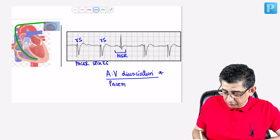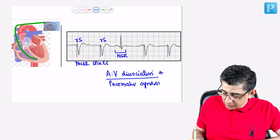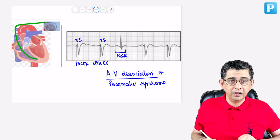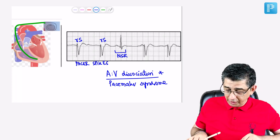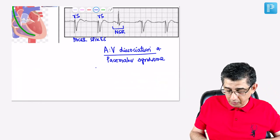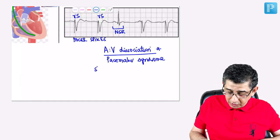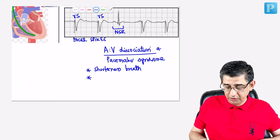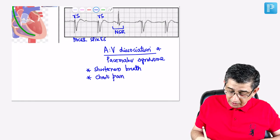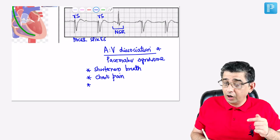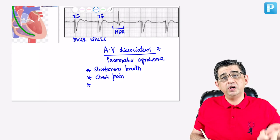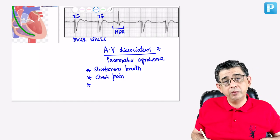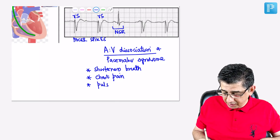VVI mode causes pacemaker syndrome — you are controlling only the ventricle and ignoring the atria. If the atria and ventricle contract simultaneously due to lack of coordination, the patient experiences: visible pulsations in the neck, shortness of breath, pulmonary edema, chest pain (due to reduced cardiac output and consequent reduced coronary blood flow causing coronary ischemia), and fluttering sensation in the chest. This is pacemaker syndrome.